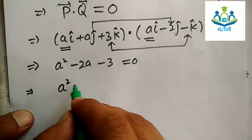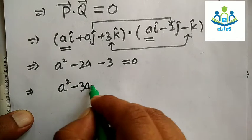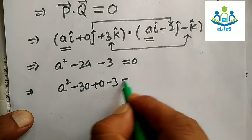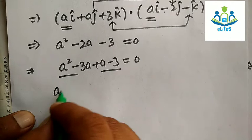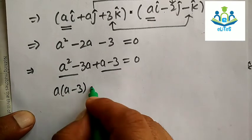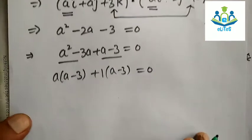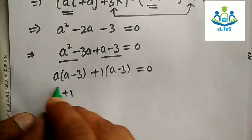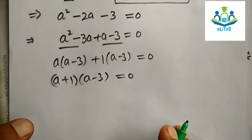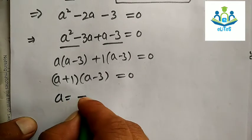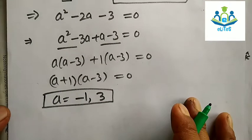Solving the quadratic equation a² − 2a − 3 = 0, we factor it as (a − 3)(a + 1) = 0. Therefore a = −1 or a = 3.